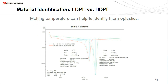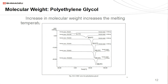Another use for DSC is material identification. For this example we have two polymers: LDPE and HDPE. We can overlay the thermograms to find the melting temperature and identify the thermoplastic — HDPE has the higher glass transition and melting temperature compared to LDPE. Here's an example of molecular weight for polyethylene glycol: as the molecular weight increases, the melting temperature also increases. This is because increasing the molecular weight of a polymer creates more entanglements in the polymer chain, which blocks segmental motion, increasing the glass transition temperature Tg and therefore also increasing the melting temperature.